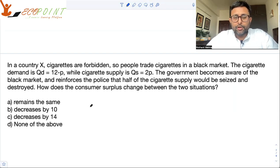Please read the question, pause the video, and try to solve it yourself first. In a country X, cigarettes are forbidden, so people trade cigarettes in a black market. The cigarette demand is Qd equals 12 minus P, while cigarette supply is Qs equal to 2P.